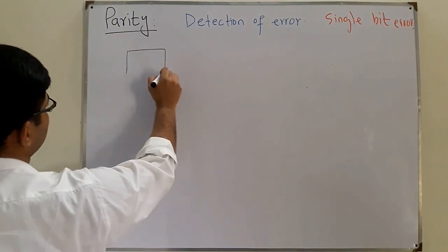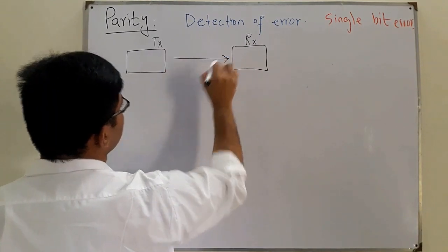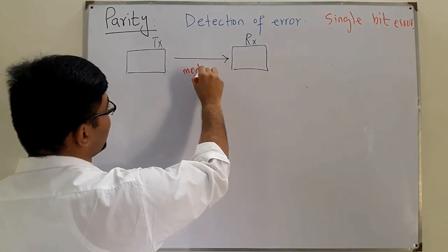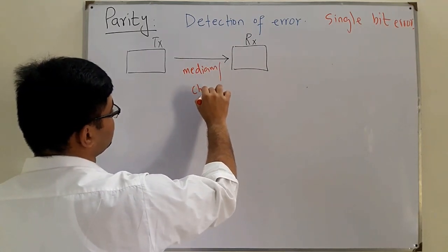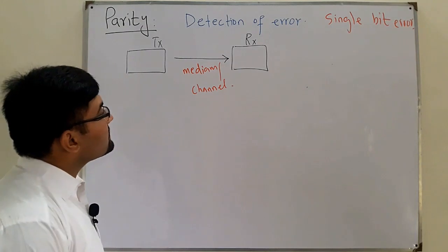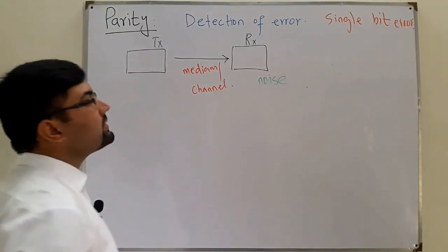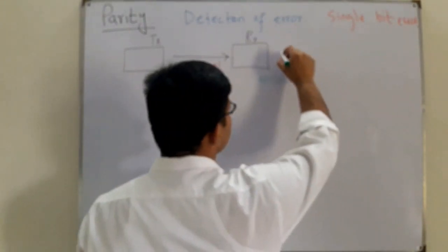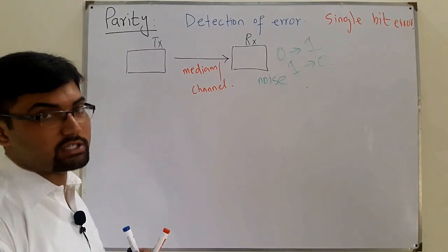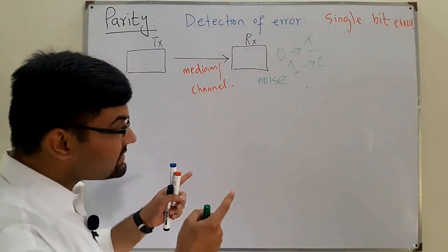If you are transmitting a signal — say this is your transmitter and this is your receiver — you are transmitting through a medium, a channel. It could be a wire, or waves in the air. During this transmission, noise gets added to the signal, which can change bits from low to high or high to low, causing an error. The receiver will not receive what the transmitter sent.